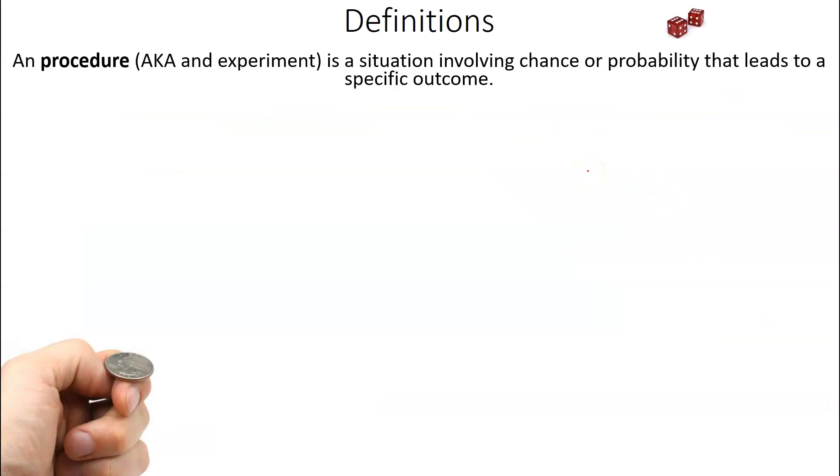All right, some more vocab. A procedure, also known as an experiment, like flipping a coin, rolling a die, that would be an experiment or a procedure, is a situation involving chance or probability that leads to a specific outcome. Notice this is the definition of a procedure in the context of probability. We're not talking about a medical procedure here. We're talking about a probability situation.